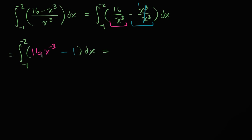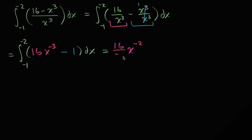Let's take the antiderivative of each of these parts. The antiderivative of 16x to the negative three — we use the power rule for integration in reverse: increase the exponent by one, going from negative three to negative two, then divide by that amount, negative two. So it's 16 divided by negative two times x to the negative two, which gives us negative eight x to the negative two.